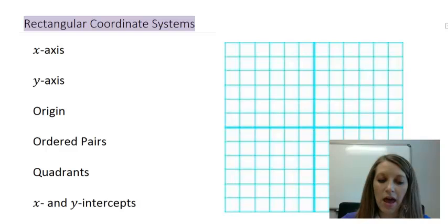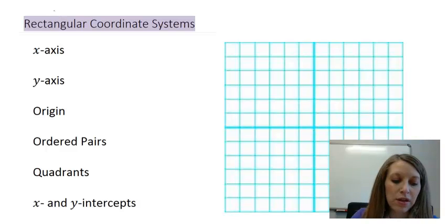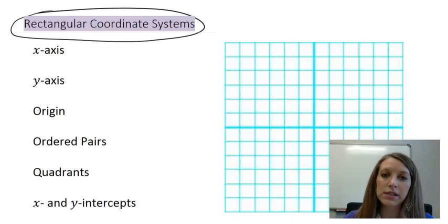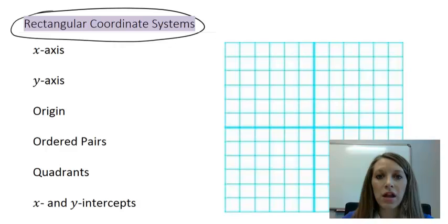Starting with the vocabulary, everything that we will be graphing in college algebra will be associated with the rectangular coordinate system, or another name that you might hear associated with it is the Cartesian plane. Everything that we'll be graphing in this class will be on this coordinate system.